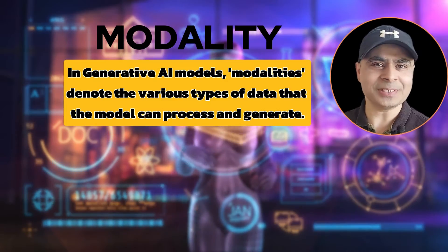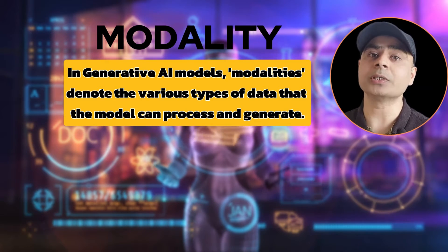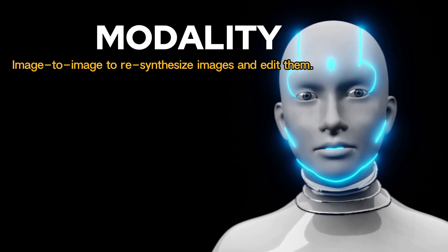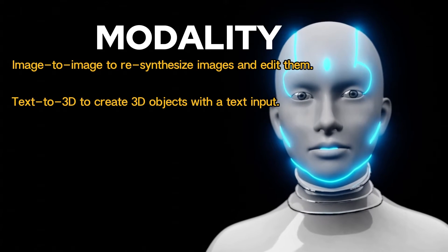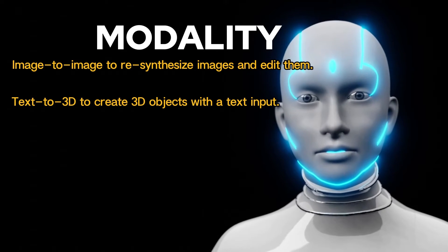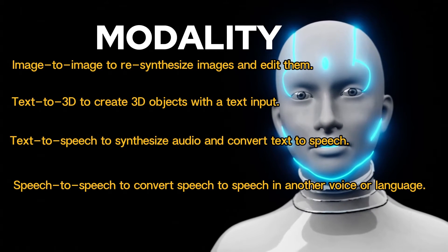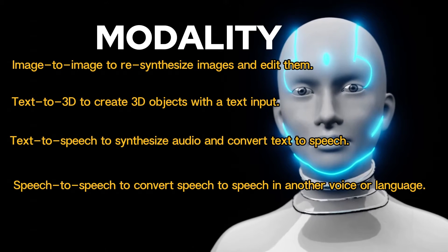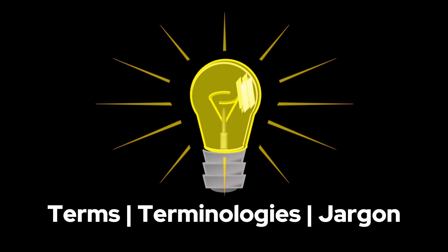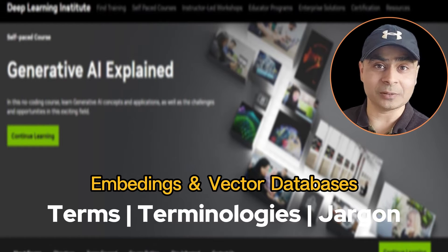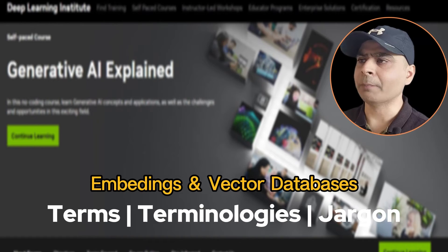You'll also understand a key concept called modalities in GenAI. Simply put, modality refers to the different ways you can use GenAI to generate output or content. For example: image-to-image to re-synthesize and edit images, text-to-3D to create 3D objects from a single text input, text-to-speech, and speech-to-speech where you can convert your voice to another character's voice or translate speech from one language to another. You'll also understand basic terms like embeddings and vectors.